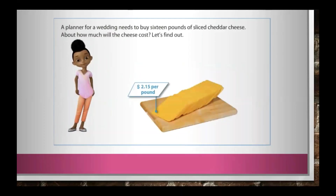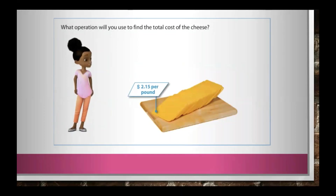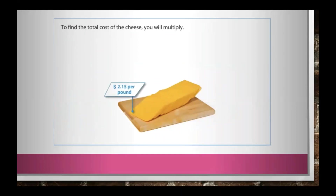A planner for a wedding needs to buy 16 pounds of sliced cheddar cheese. About how much will the cheese cost? What operation will you use to find the total cost of the cheese? To find the total cost of the cheese, you will multiply.